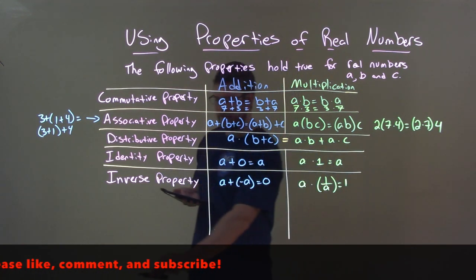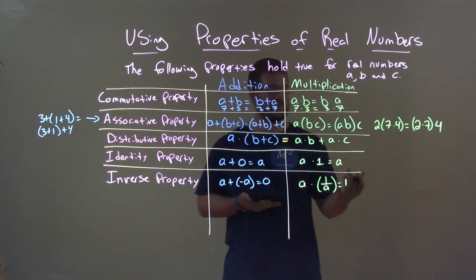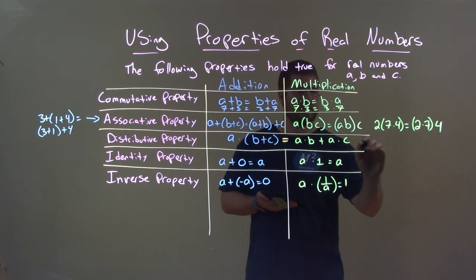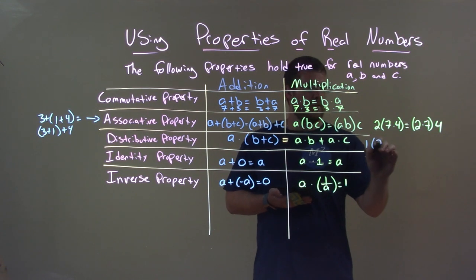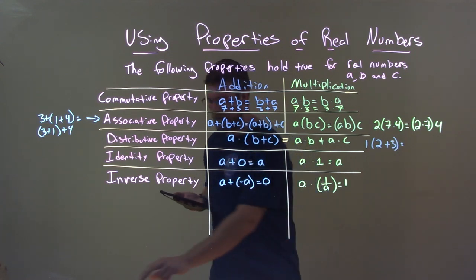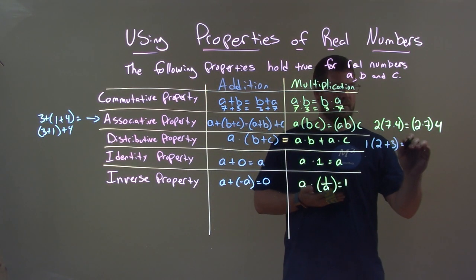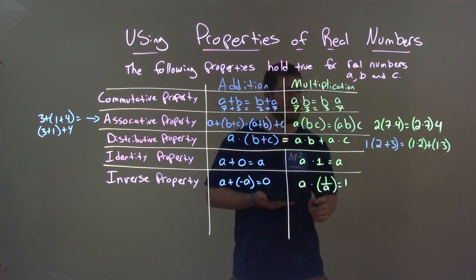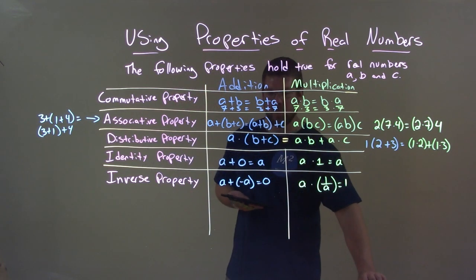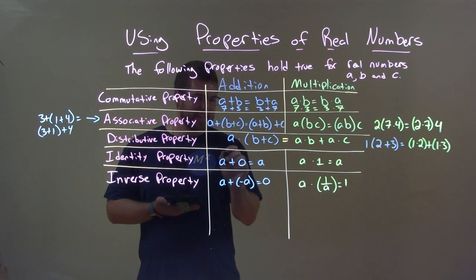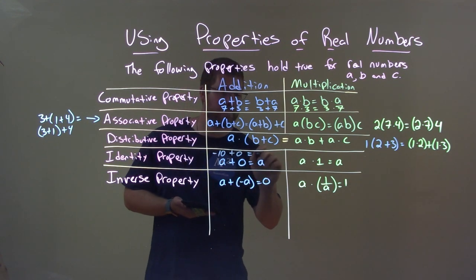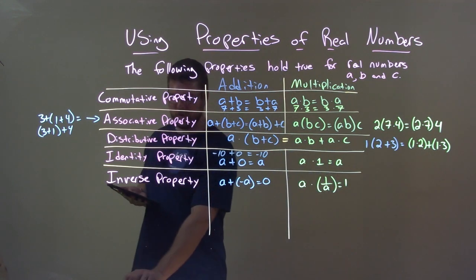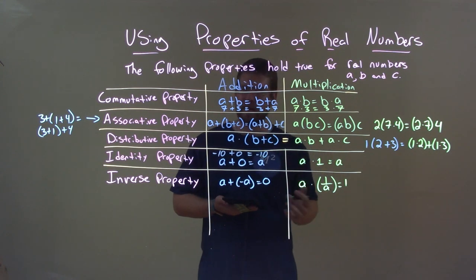For the distributive property: 1 times 2 plus 3 is the same thing as 1 times 2 plus 1 times 3. For the identity property, it can really be any number — negative 10 plus 0 equals negative 10. And for the multiplicative identity: negative 8 times 1 equals negative 8.